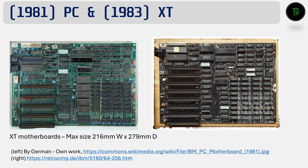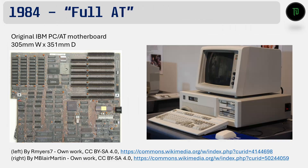A few years later in 1983, IBM extended the IBM PC standard with more expansion slots, slightly reducing the spacing between the slots, and removing the cassette port entirely. This resulted in the XT motherboard standard. By this time, clone manufacturers had already copied the 5150 motherboard and were quick to copy the new XT and make it the new standard for IBM PC compatibles. Both the PC and XT boards were sized at 216 x 279 mm and were designed to fit within a standard desktop case. In 1984, IBM released the PC-AT with a brand new Intel 286 processor and a 16-bit external bus.